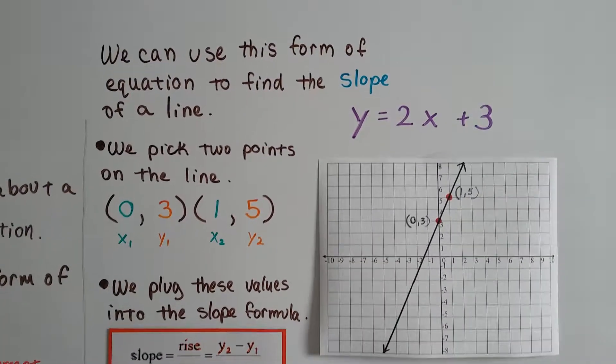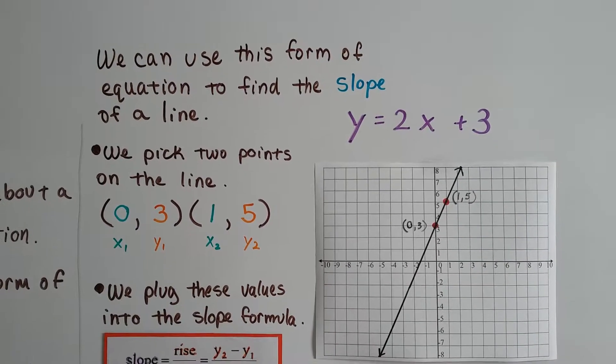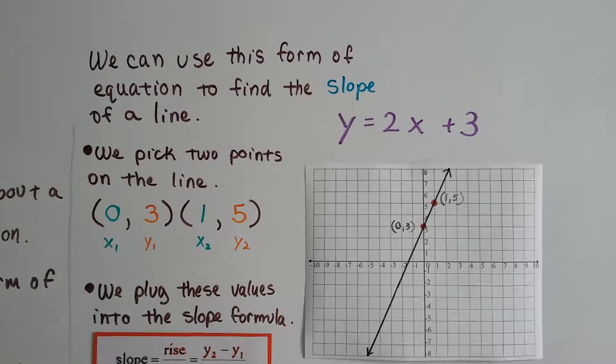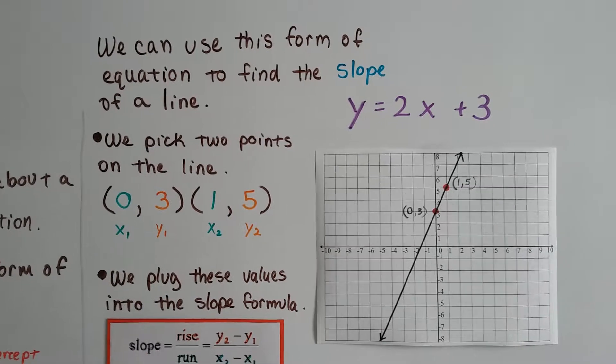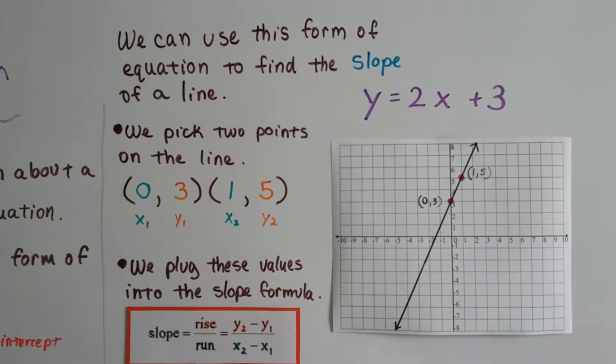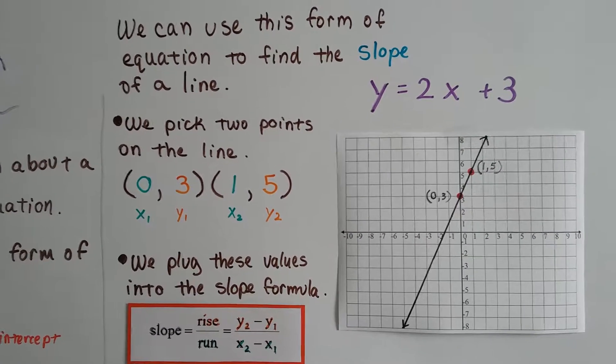So let's take a look at this. We can use this form of equation to find the slope of a line. Here's our equation, y equals 2x plus 3. So what we do is we just pick two points on the line. It could be any two points we want.